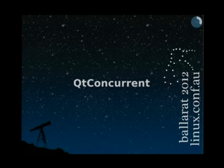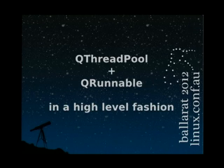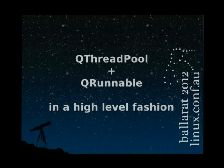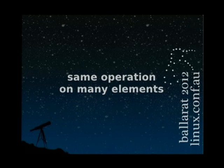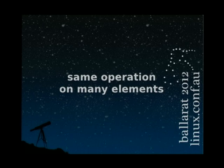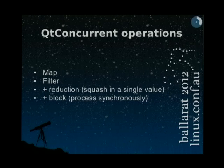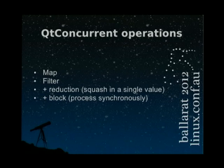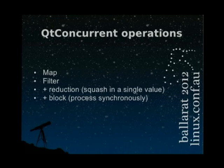But this is not so interesting — you've seen this in Java, in many other languages. I want to show you something way better: it's called QtConcurrent. QtConcurrent is basically QThreadPool and QRunnable in a high-level fashion — a high-level API taking advantage of both for creating something extremely easy to use and extremely powerful. It's especially useful when you have to perform the same operation on many elements. It does two main operations: mapping, useful for performing the same operation on many elements, and filtering, useful for obtaining a filtered list. It also supports reduction and blocking for synchronous processing.